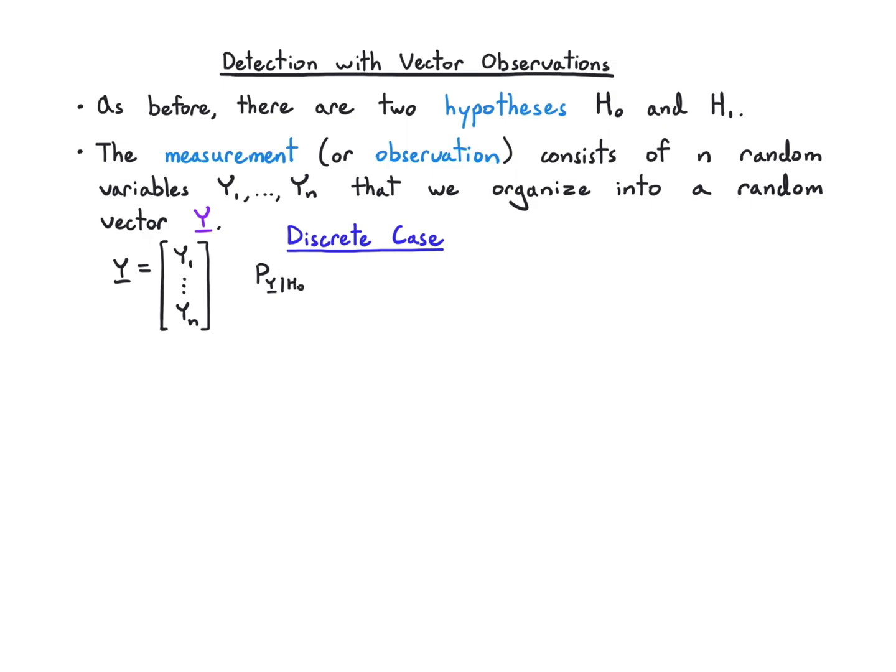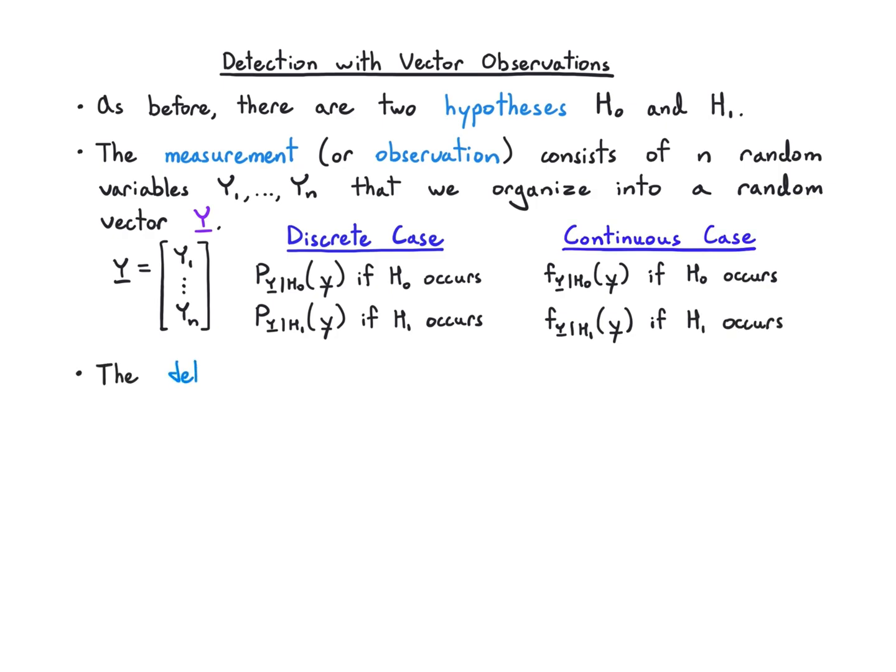In the discrete case this vector has a pmf under H0 and under H1, and in the continuous case it has conditional pdfs under H0 and under H1. So it's the same as before except it's conditional pdfs for vectors.